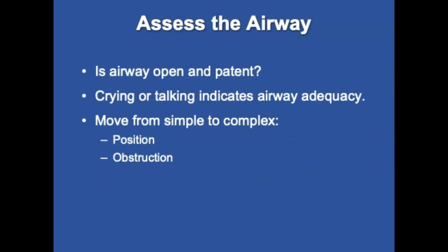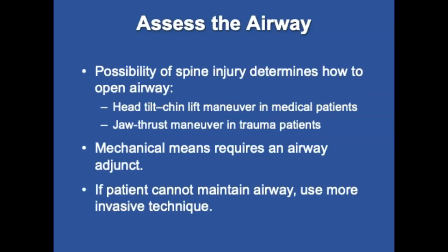Assess the airway — is it open and patent? Responsive patients who are talking or crying provide a clue about airway patency. Snoring respirations indicate a positioning problem; gurgling or bubbling indicates a need for suctioning. When considering airway options, move from simple to complex. A possible spinal injury determines which technique to use: head tilt-chin lift for medical patients, jaw thrust for trauma. If using a bag-valve mask, use an airway adjunct — oropharyngeal or nasopharyngeal — though these take considerable time to prepare. If the patient cannot maintain their airway, use a more invasive technique, including endotracheal intubation or a rescue airway such as a King airway, laryngeal mask, or surgical airway.